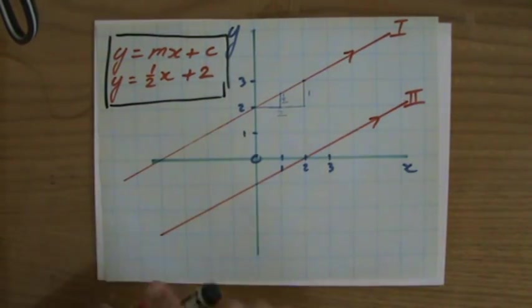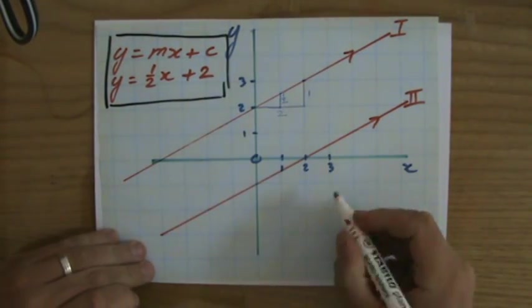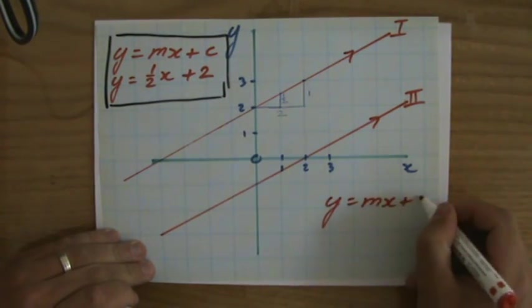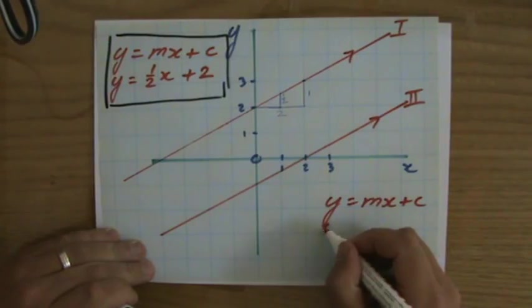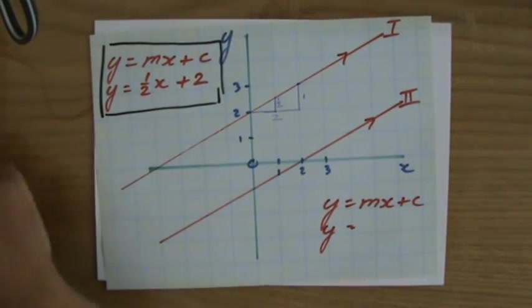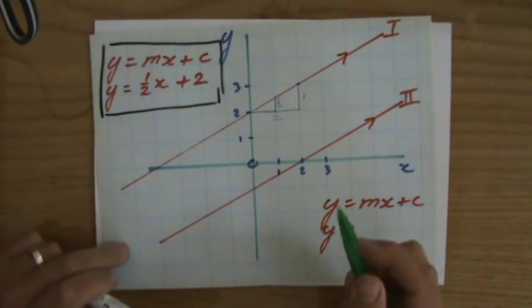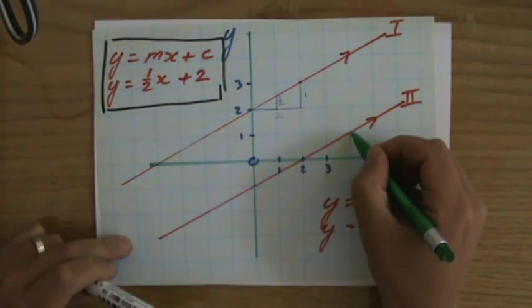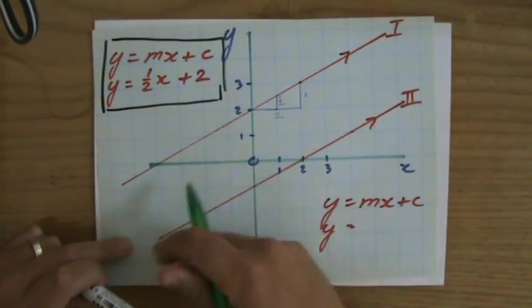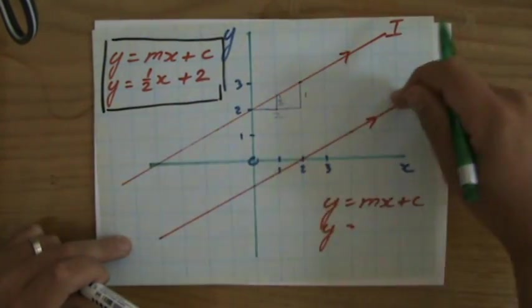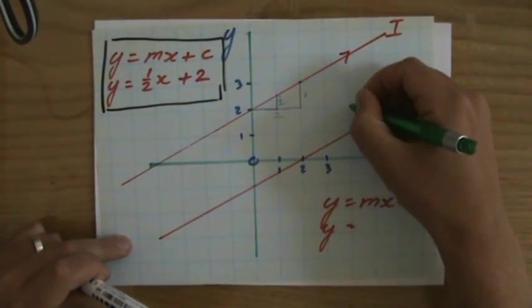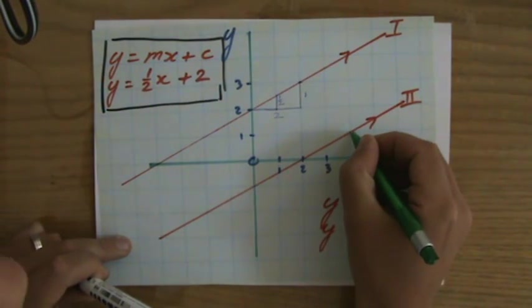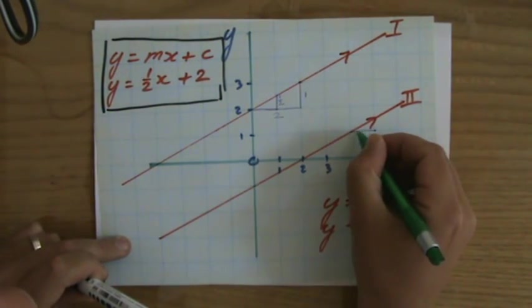Now for line two, and we're going to do the same thing. y equals mx plus c, gradient intercept form. And let's see, what is the gradient for line two? Well, let's find a nice point. Let's do it over here. It doesn't matter. The gradient, it is constant. It doesn't matter where you go. But it's nice to be on an intersection point of those squares of your graph paper. Because then I can easily go one step to the right, one unit to the right.